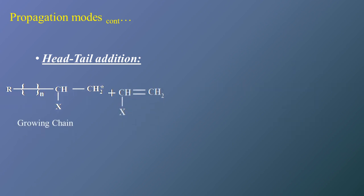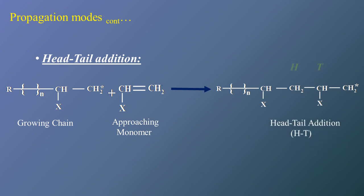Next is head-tail addition — the head of the growing chain and the tail of the fresh monomer. Here, CH2* is the head position of the growing chain, and CHX is the tail position of the vinyl monomer or fresh monomer that reacted with each other. The double bond breaks, the reaction between this CH2 and the CH of the fresh monomer takes place, and ultimately this polymeric reaction will continue until the last monomer is consumed.